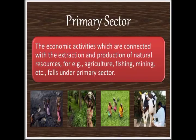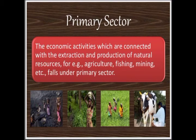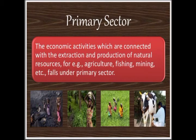The primary sector is also known as the agriculture sector. There are many activities which are performed using natural resources — this is called the primary sector. For example, the cultivation of jute depends on the jute plant, and for growing the jute plant we depend on natural factors like rainfall, soil, heat, and climate. So this sector is also known as the natural resources or agriculture sector.